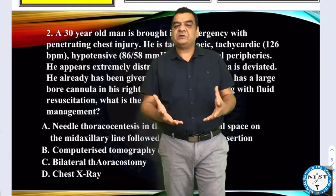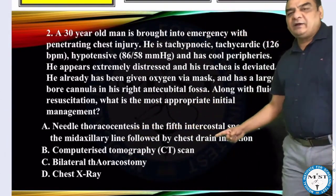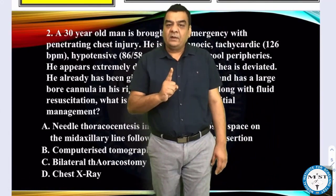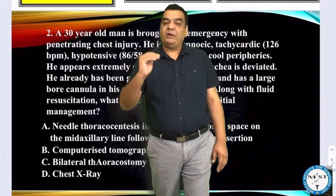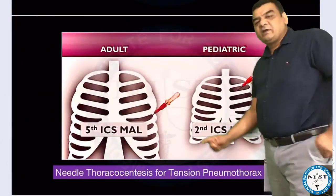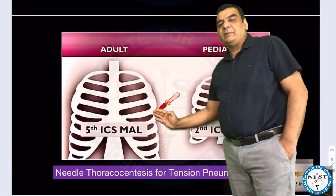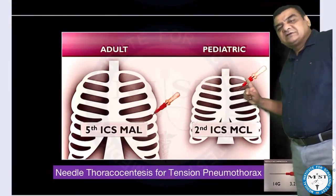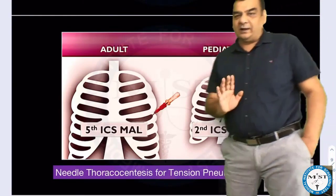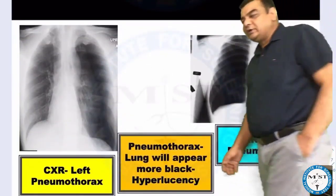To save this patient's life, you need to insert a needle — needle decompression. For an adult (30-year-old), the site of needle insertion is the fifth intercostal space, just anterior to the mid-axillary line. If the patient were a child under 14 years, the needle would go in the second intercostal space in the mid-clavicular line.